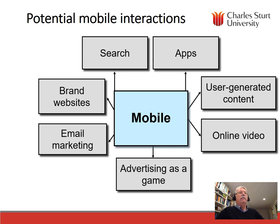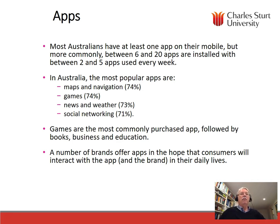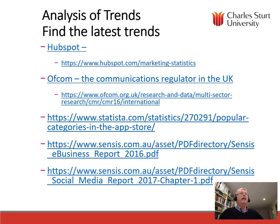When we look at potential mobile phone interactions, there are a number of areas to consider, including how consumers search, the kind of apps they use, the influence of branded websites, the use of email marketing, advertising as a game, user-generated content, and online video. In relation to apps, most Australians have at least one app on their mobile, but more commonly between six and twenty apps. The most popular apps are maps and navigation, games, news and weather, and social networking. Games are the most commonly purchased app, followed by books, business, and education.